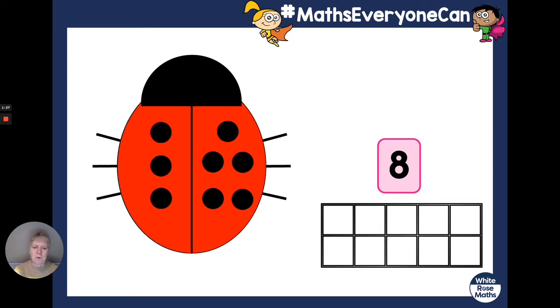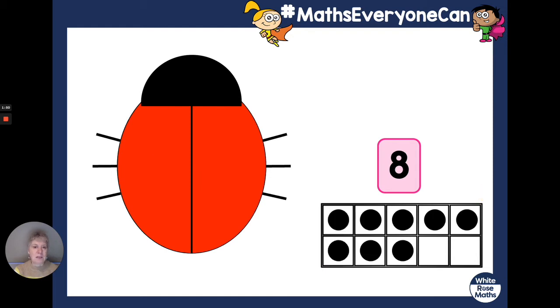How many counters have we got all together? That's right, we've got eight, haven't we? And it looks like this. Eight. Three and five makes eight. Good job. All right, you ready? I'm going to put the counters back on my tens frame. Take your counters off the ladybird. There they are again. We're still going to use eight counters, look. This time, though, they're going to go like this.